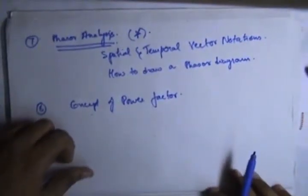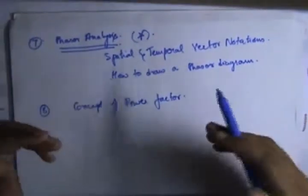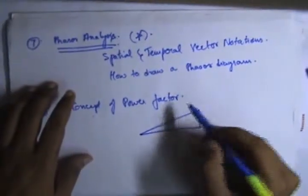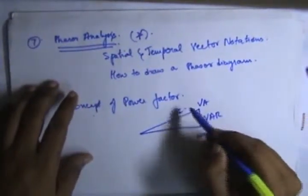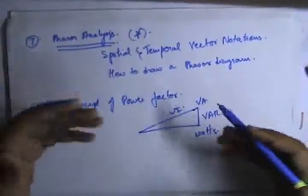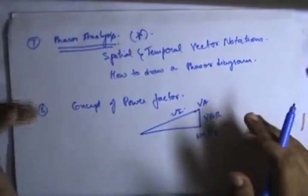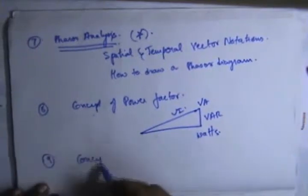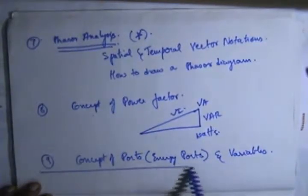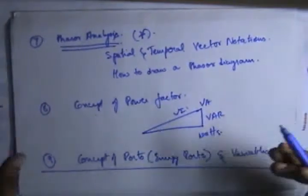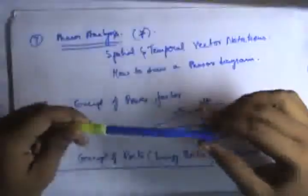After phasor analysis, we concentrate on the concept of power factor. The power transferred to the load is the active power, and the power fed back into the source is the reactive power. We will discuss what VI, VIR, and related quantities are — everything covered in the concept of power factor. Later, the concept of ports, energy flow, and related variables are covered in the ninth lecture of the Electrical Essentials series. Concept of ports involves the flow of energy from one form to another. With this, we conclude Electrical Essentials.